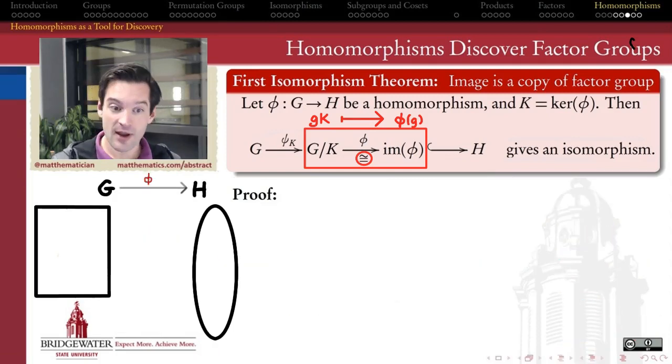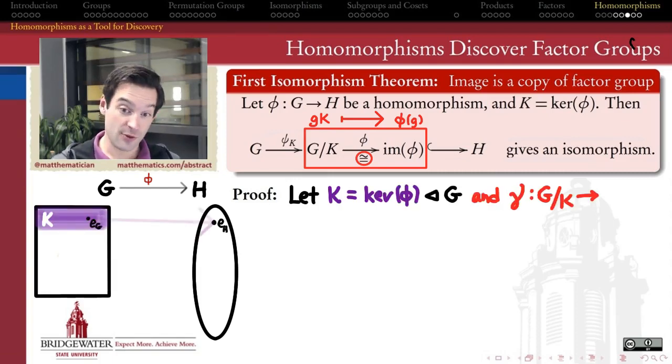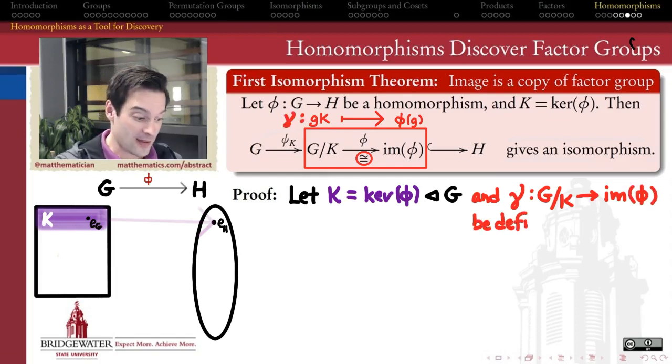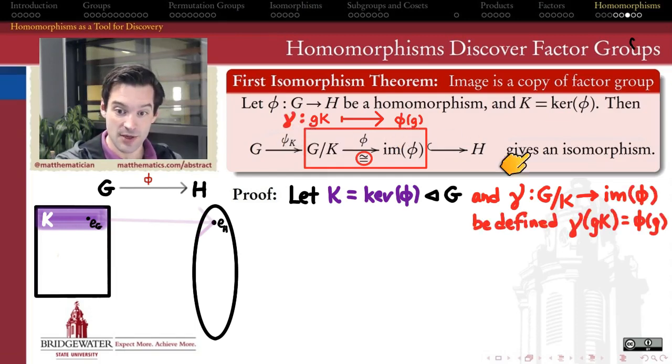So again, starting from this diagram, I've got a homomorphism from G to H. Let's let K denote the kernel of phi. It's a normal subgroup of G. And then let's describe this association of GK to phi of G. We're going to call that function gamma. So this is the supposed isomorphism between the factor group G mod K and the image of the homomorphism phi. So why is it actually an isomorphism?